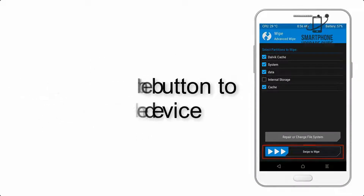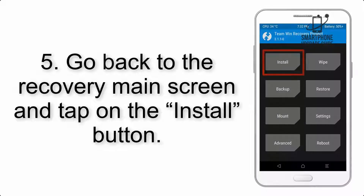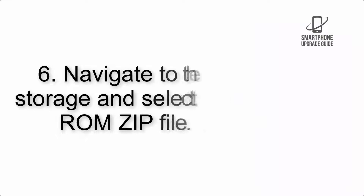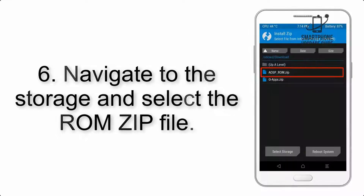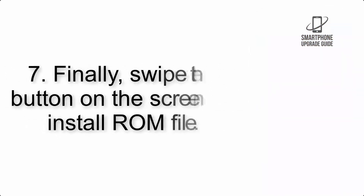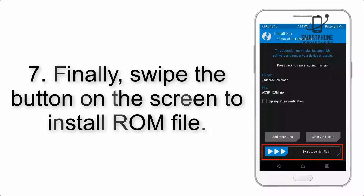Step 4: Swipe the button to wipe the device. Step 5: Go back to the recovery main screen and tap on the Install button. Step 6: Navigate to the storage and select the ROM zip file.